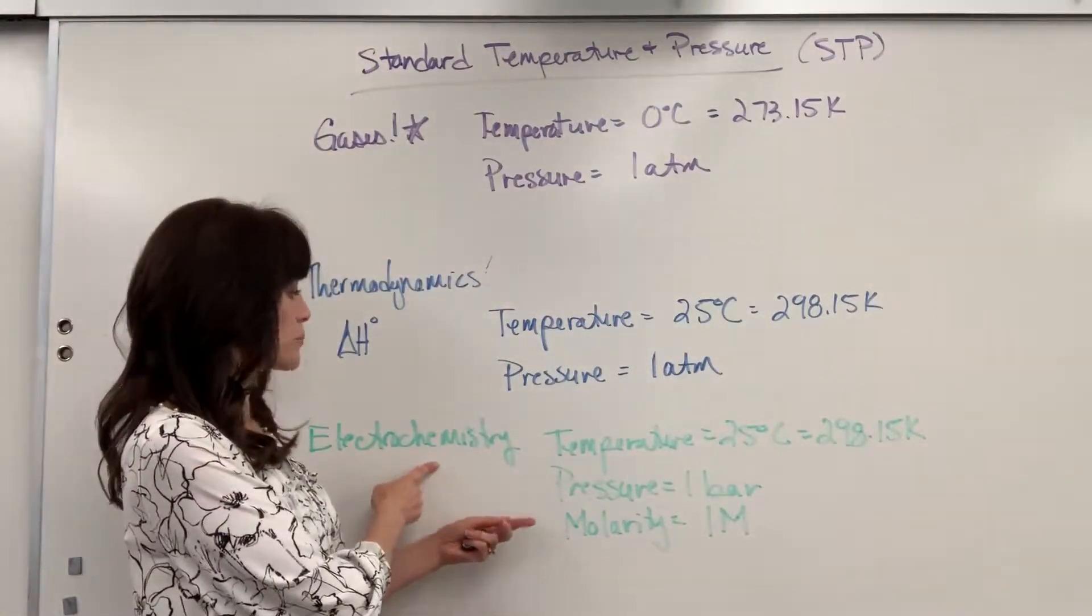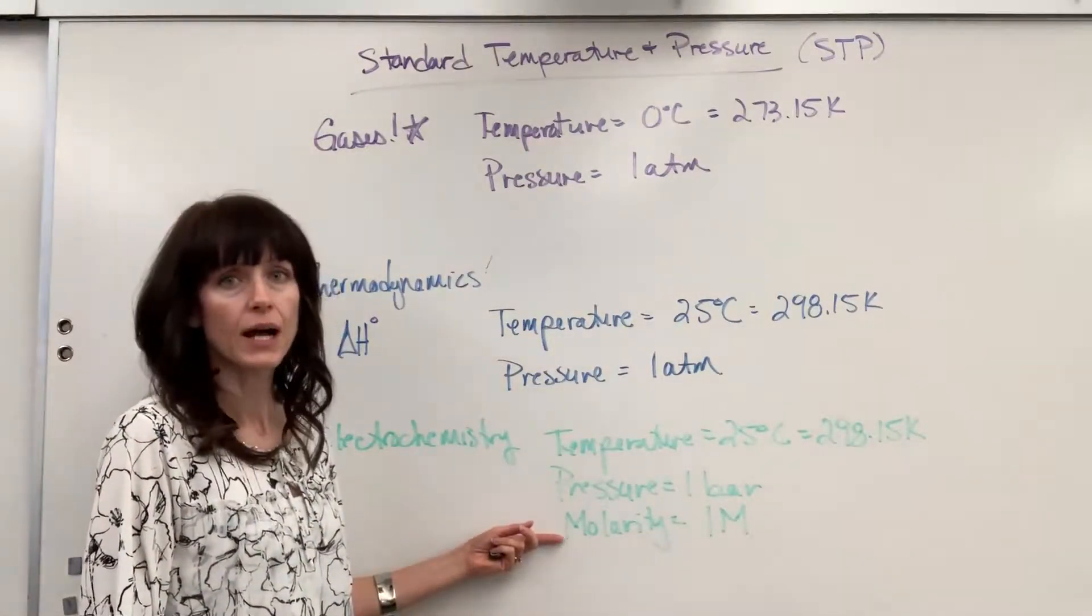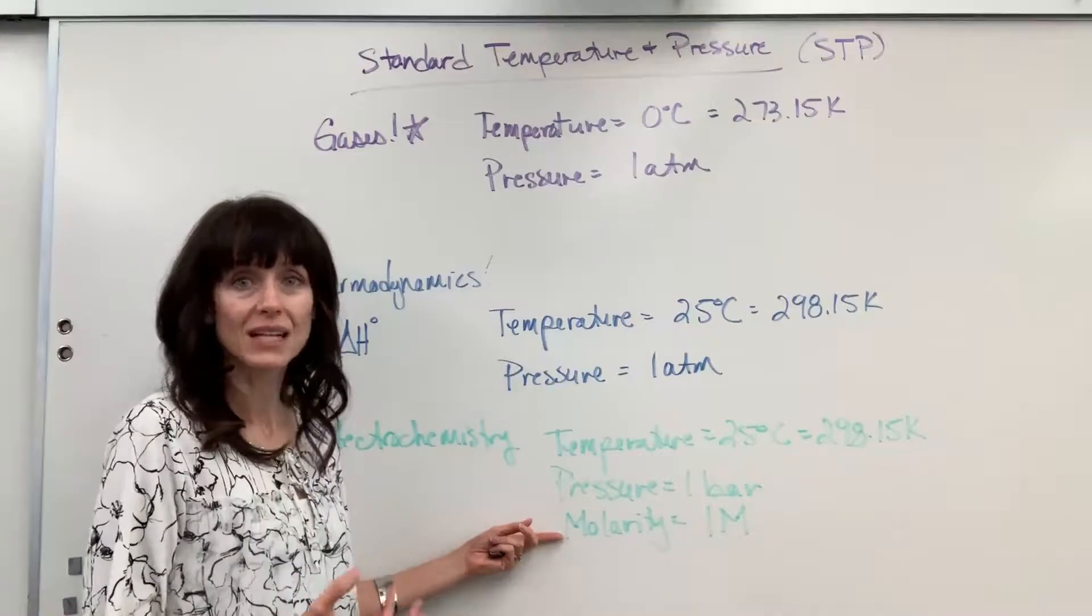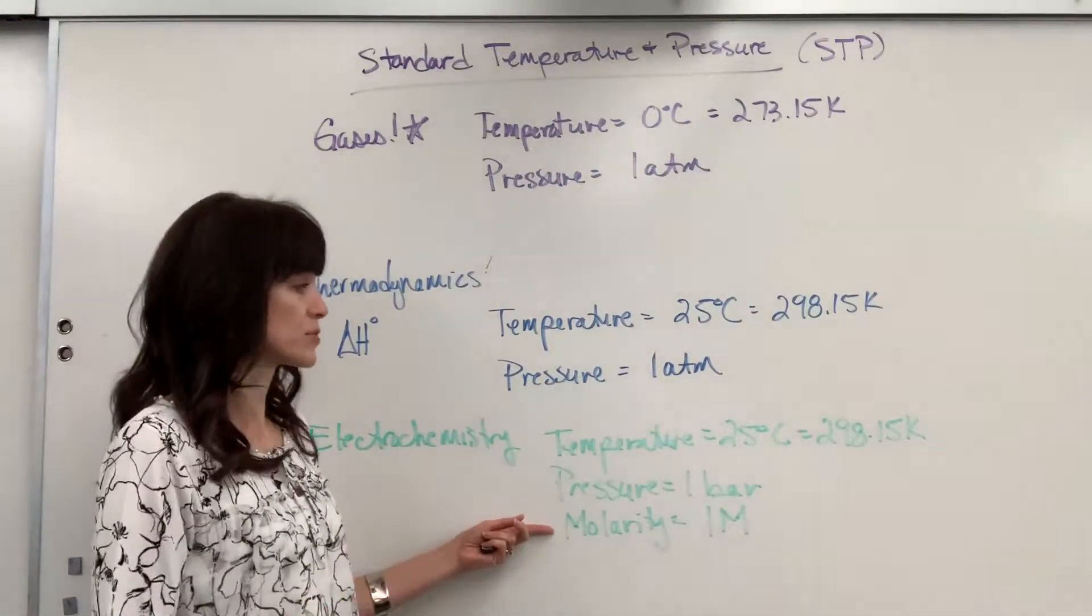the standard pressure for electrochemistry is 1 bar. And then lastly, we deal with molarities. When we're doing our voltaic cells, electrolytic cells, standard conditions for electrochemistry is 1 molar.